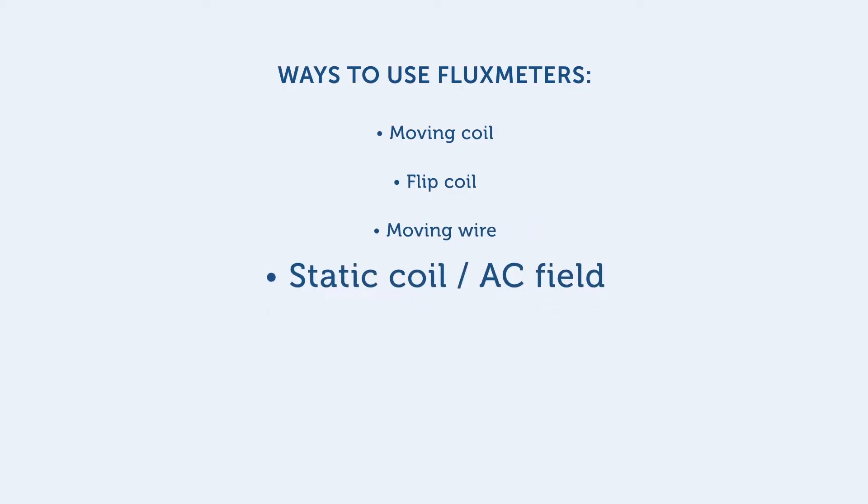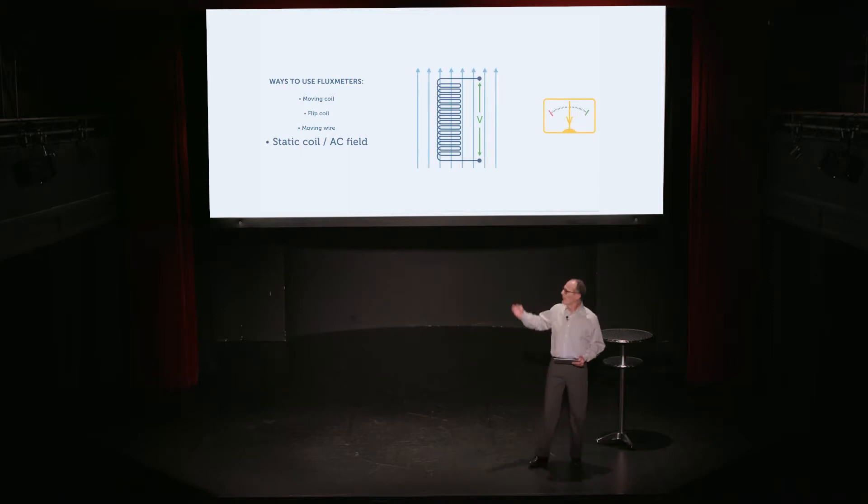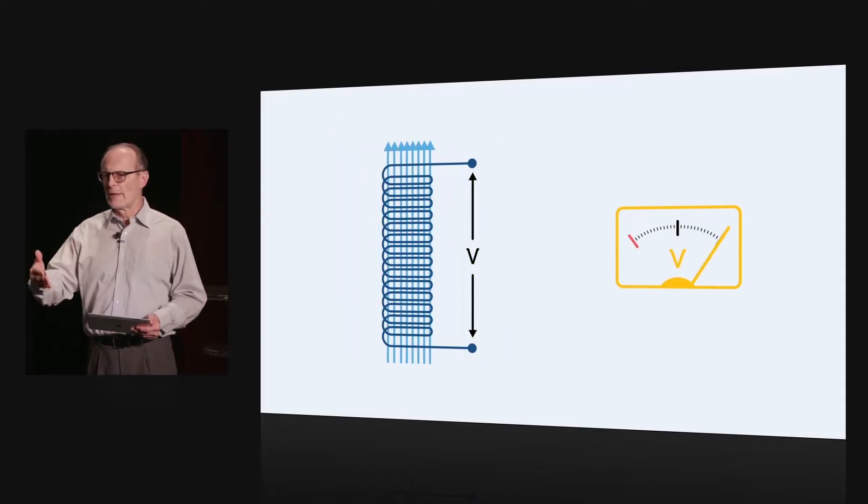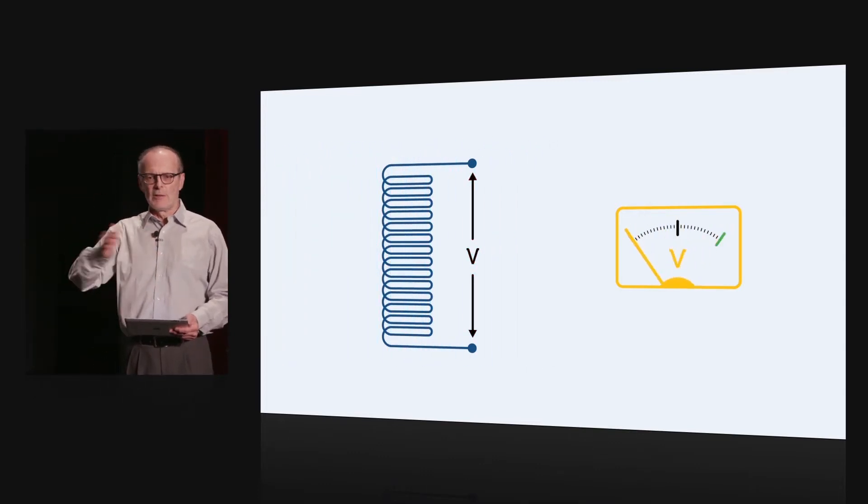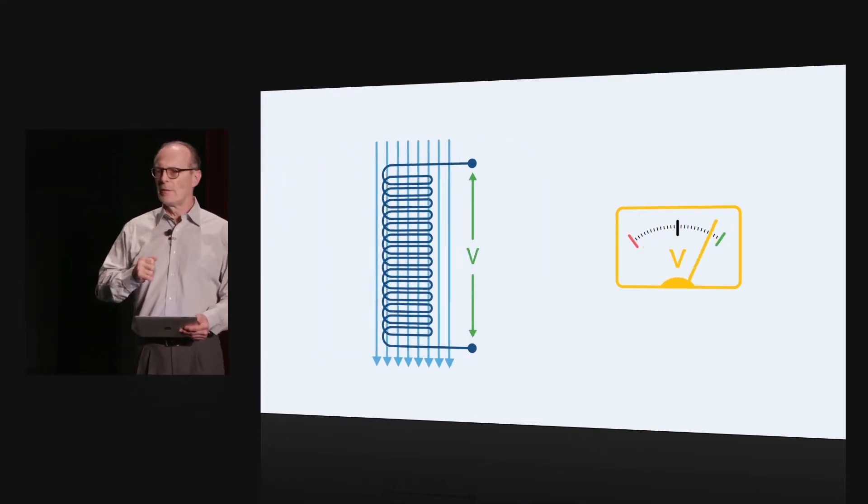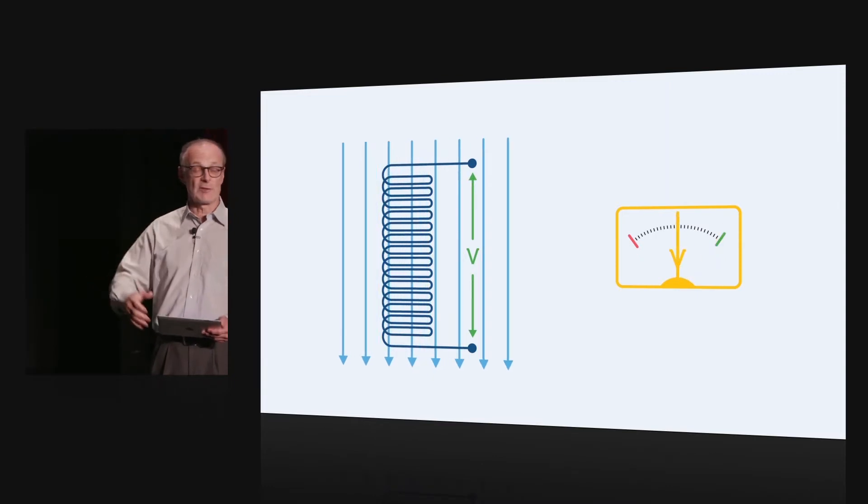We also can use just a plain static coil. This is useful if we have an alternating field, an oscillating field, that induces a voltage in this static coil just sitting there.